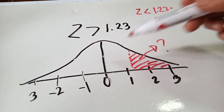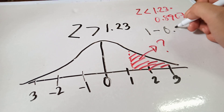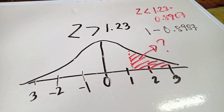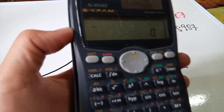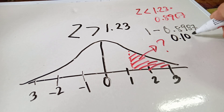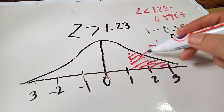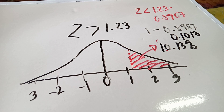We know that the total area is a whole number equivalent to 1. So we compute 1 minus 0.8987 using the calculator: 1 minus 0.8987 equals 0.1013. So the area is 0.1013, which is equivalent to 10.13%. This is another example of using the Z-table.